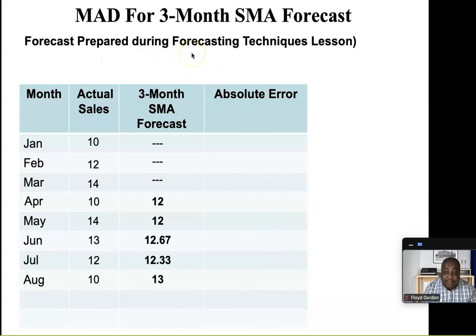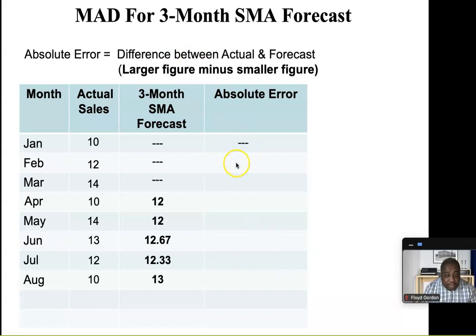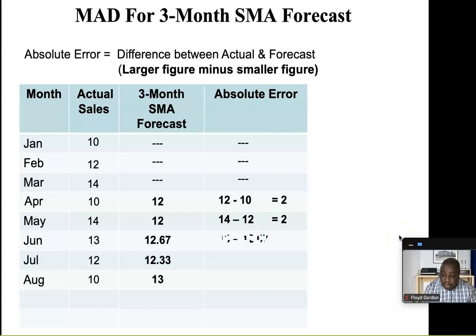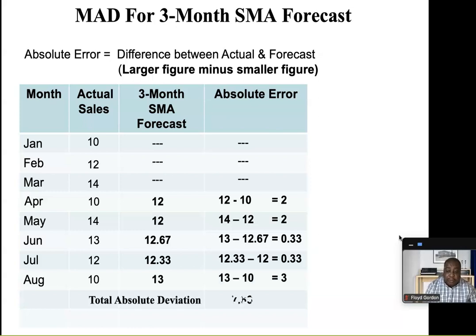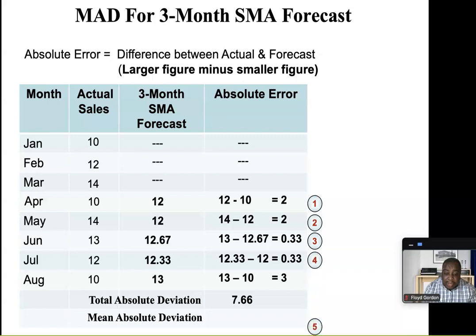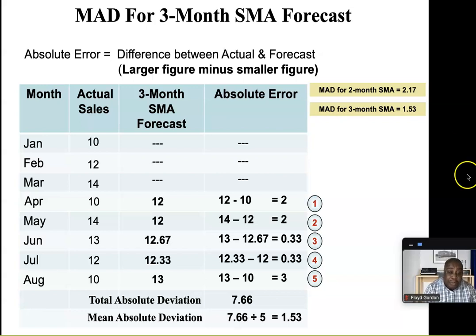We also did a three-month simple moving average forecast. Ignore the first three months since there are no forecasts. For April: 12 minus 10 = 2. May: 14 minus 12 = 2. For June: 13 minus 12.7 = 0.33. For July: 12.33 minus 12 = 0.33. And for August: 13 minus 10 = 3. Adding these up we get 7.66. We have five values, so 7.66 divided by 5 gives us 1.53. Comparing these two techniques, the three-month simple moving average is more accurate than the two-month simple moving average because it has a lower MAD.